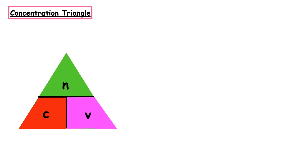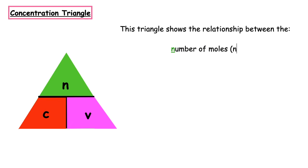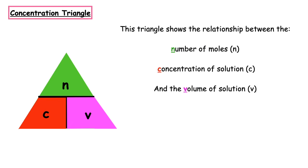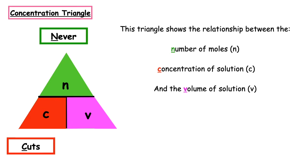In today's lesson, we are going to learn how to use the concentration triangle. This triangle shows the relationship between the number of moles, represented by the letter N, the concentration, represented by the letter C with units of moles per litre, and the volume, represented by the letter V, always measured in litres. A way to remember this triangle, alongside the mass triangle which was 'my nice granny', this time we have 'never cuts violets'.